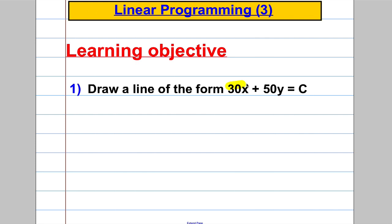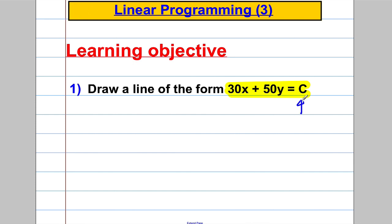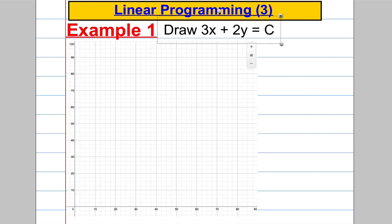If I asked you to draw the straight line 30x plus 50y equals C on an axis, where C is some constant not given to you as a number, this would be a straight line — and there would be several of them. I want you to be able to draw straight lines that match that form. That's the skill we're going to need to solve these problems, so let's have a go.